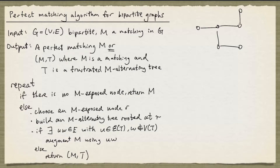The steps are as follows. We repeatedly do the following. First, we check if there is any M-exposed node. If there is none, then M must be a perfect matching, and so we return M. Otherwise, we choose an M-exposed node R and build an M-alternating tree rooted at R.